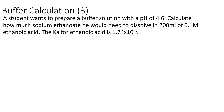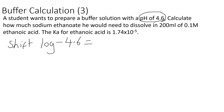In the third question, a student wants to prepare a buffer solution with a pH of 4.6. Calculate how much sodium ethanoate they would need to dissolve in 200 ml of 0.1 mol/dm³ ethanoic acid. Ka = 1.74 × 10⁻⁵. The first thing to do is convert the pH of 4.6 into the concentration of H⁺. On a Casio calculator, press shift then log, then enter minus 4.6. That gives a value of 2.51 × 10⁻⁵ mol/dm³ for the concentration of H⁺.